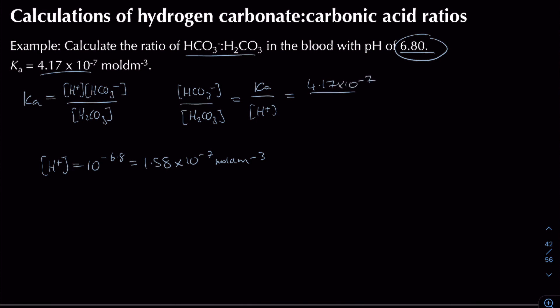Dividing Ka by [H+] gives a value of 2.63. Expressing this as a ratio where the acid equals 1, for every one part carbonic acid we have 2.63 parts hydrogen carbonate ions.